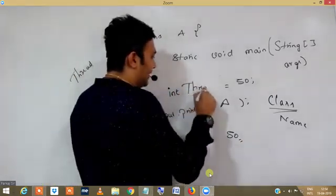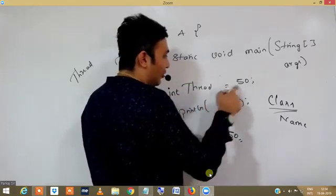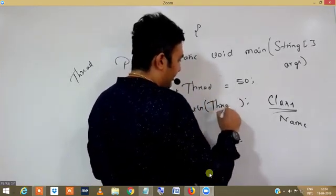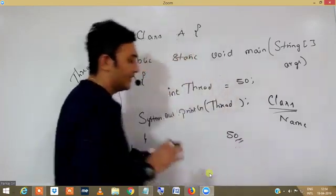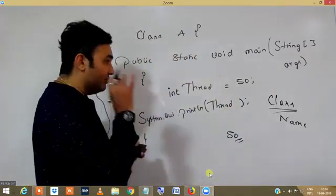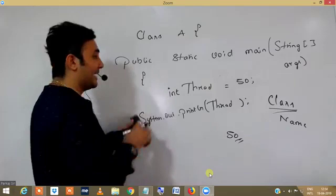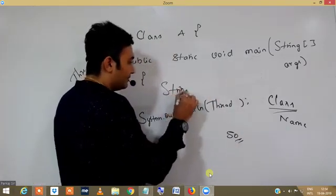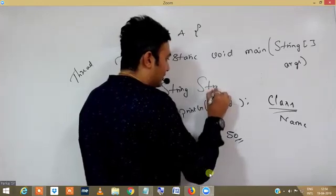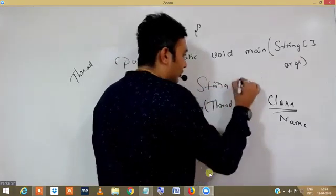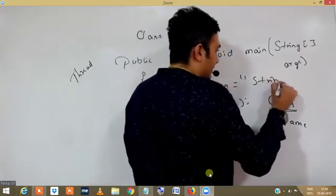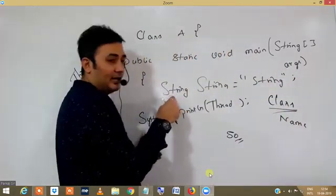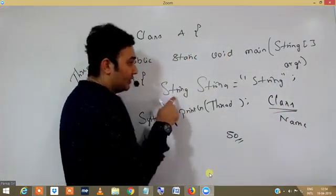So if I write down int thread equals 50, let's try to print thread. This would print 50. So in Java, variable name can be class name. We can also do this: String string equals double quotes string. So please understand, now string here is a class name, this will be treated as a variable name, and this will be the value stored in it.